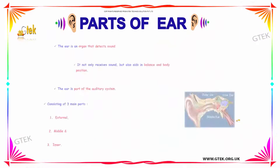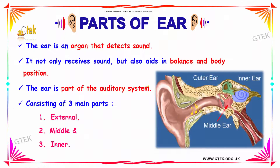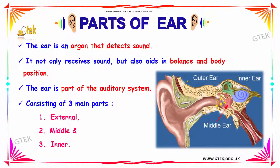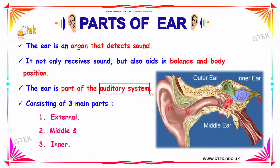The Ear is an organ that detects the sound surrounding the person. It not only receives the sound, but it also aids in the balance of the body. The Ear is part of the auditory system, and it consists of three main parts: the outer ear, the middle ear, and the inner ear.